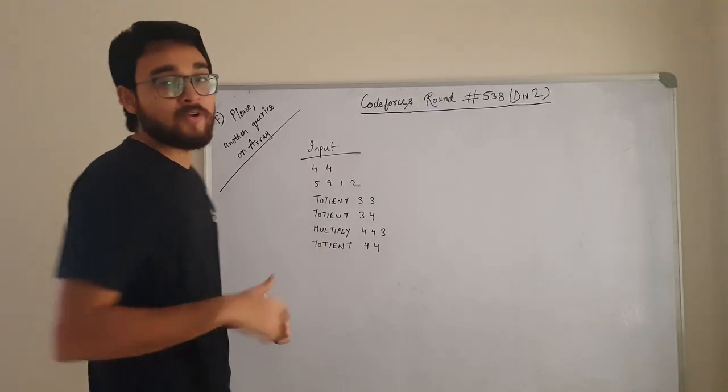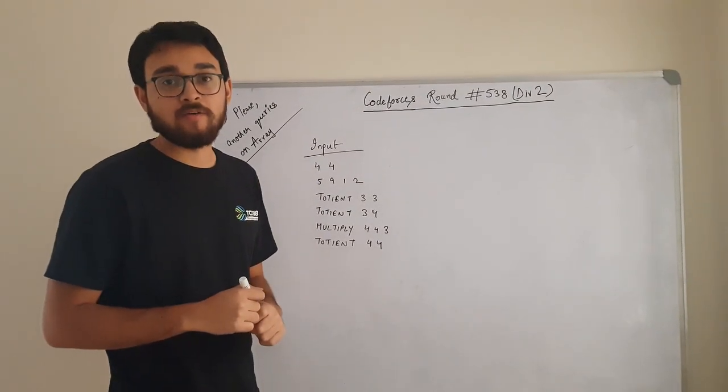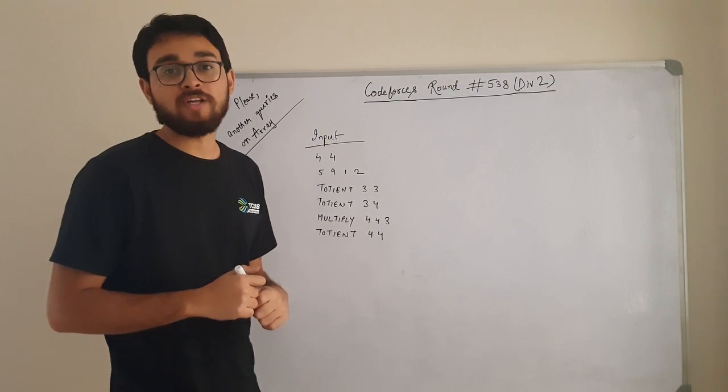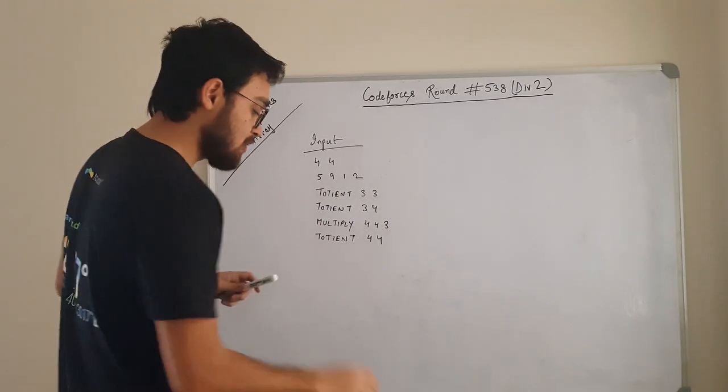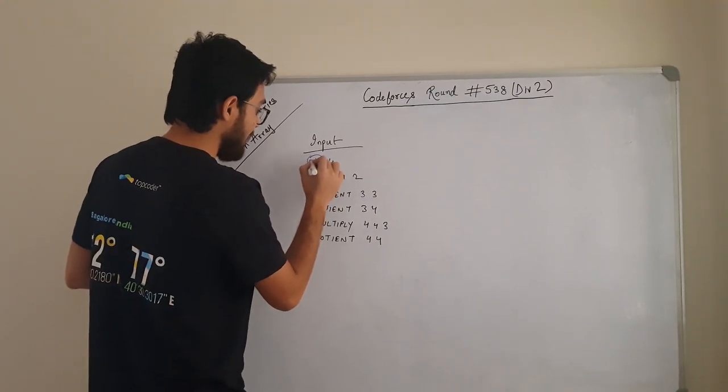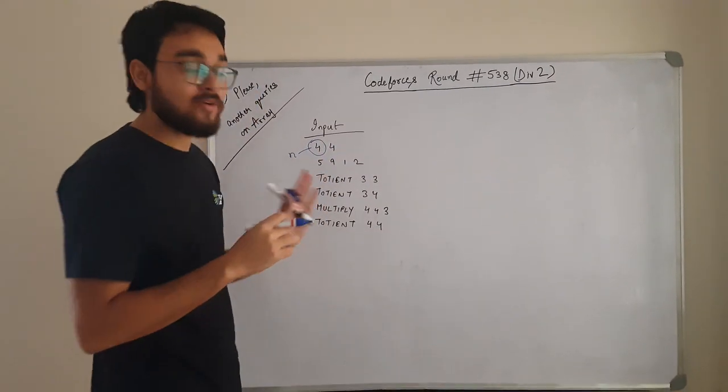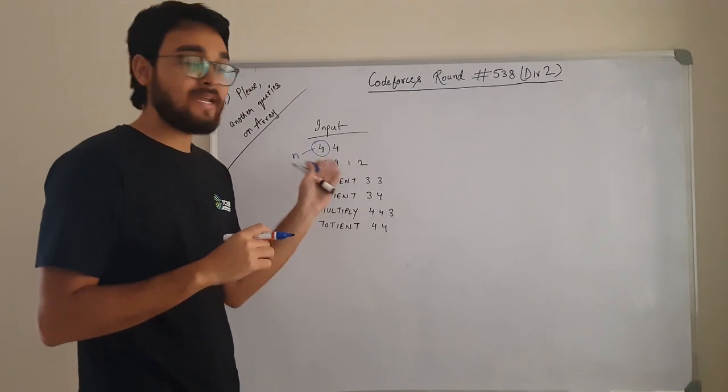Today we will be solving problem F from Codeforces round 538. For detailed problem statement, follow the link in the description. What the problem wants to say is we are given N, which is basically the number of elements: 4, 5, 9, 1 and 2.